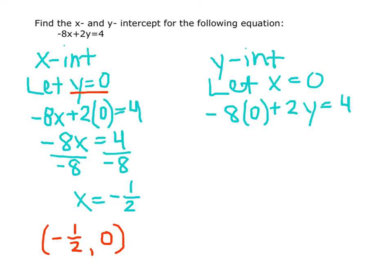Simplifying, the negative 8 times 0 is 0. We have 2y equals 4. Solving for y, we divide both sides by 2. So y equals 2.